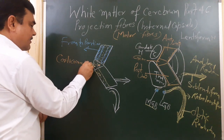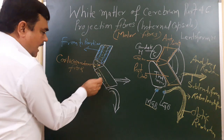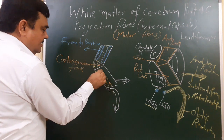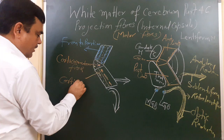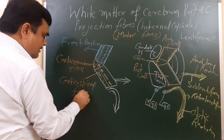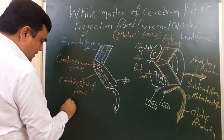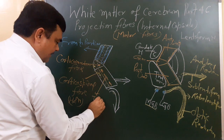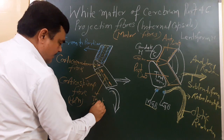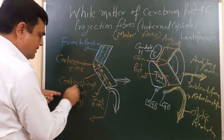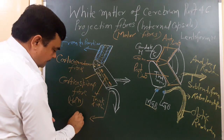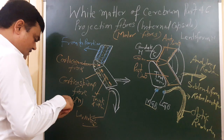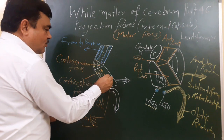From the posterior limb we have corticospinal fibers. The corticocontine fibers in the genu region are for the head and neck region, and the posterior limb fibers are for the trunk and upper limb. The corticospinal fibers for the lower limb are also located here, along with the corticorubral fiber.